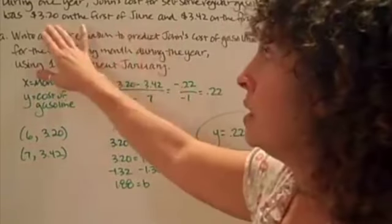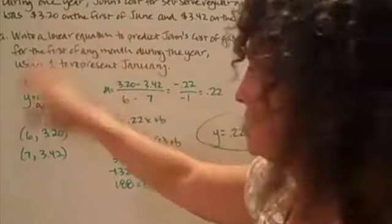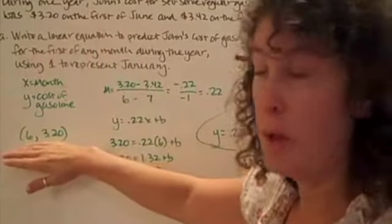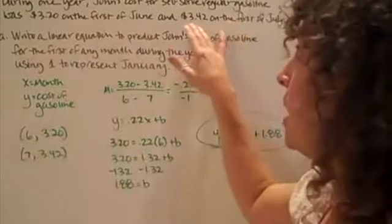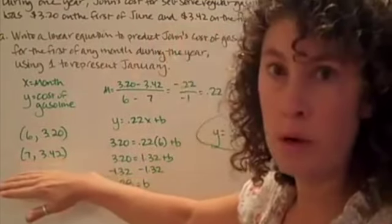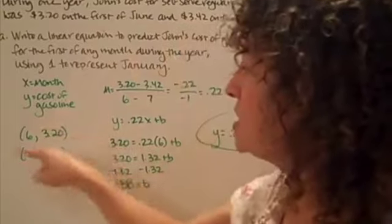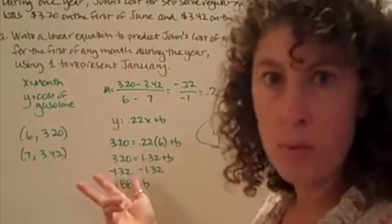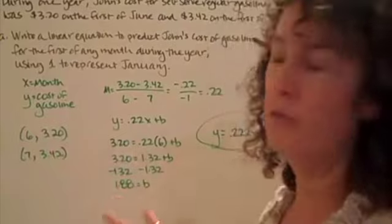So when I look at this as x and y, that reminds me that I can think about it as an ordered pair or a point on the graph. So I can write the information I know as ordered pairs. They told me that in June the cost of gasoline was $3.20. Once I start to see this I realize, I know how to find an equation from two points. I can do that.